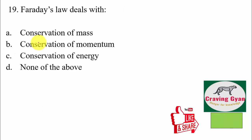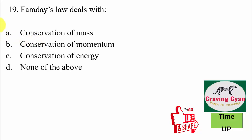Question 19: Faraday's law deals with — first option conservation of mass, second option conservation of momentum, third option conservation of energy, fourth option none of the above. We know that Faraday's law always talks about conservation of energy, hence the suitable option is option number C.